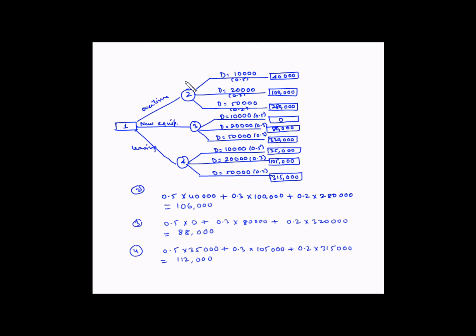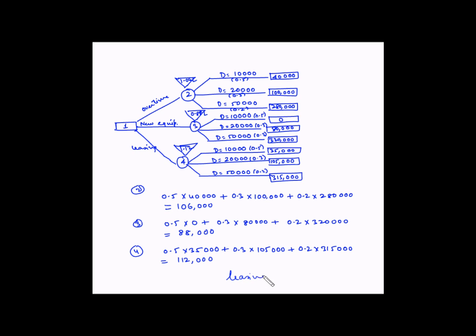Let us put these values in an inverted triangle on top of the three nodes: node 2 = ₹1.06 lakh, node 3 = ₹0.88 lakh, and node 4 = ₹1.12 lakh. The maximum expected value is achieved at node 4, so the option to be chosen is to lease the new machine. Leasing is the answer.